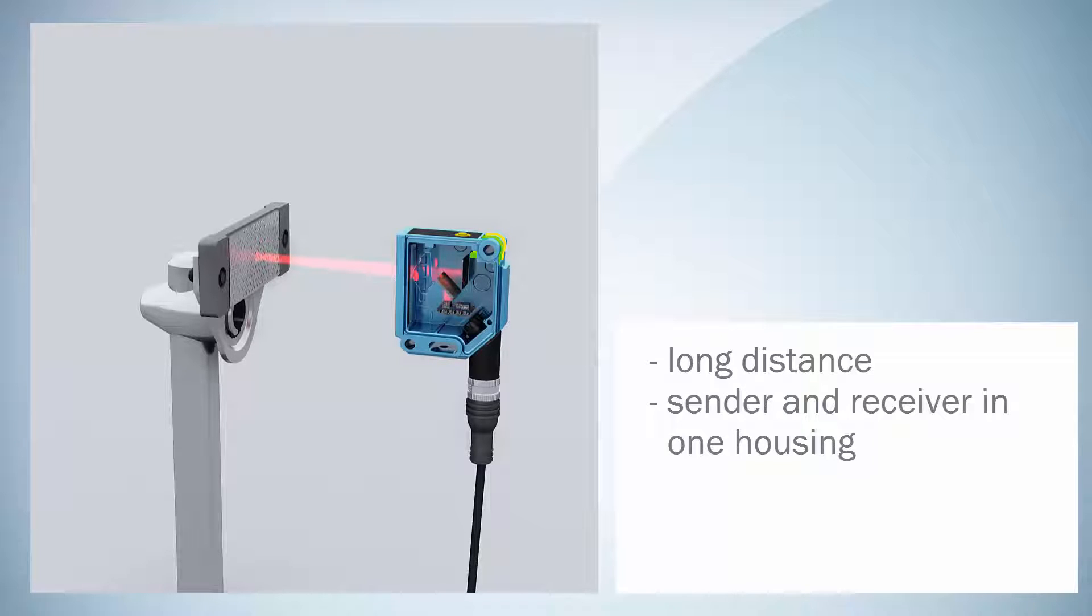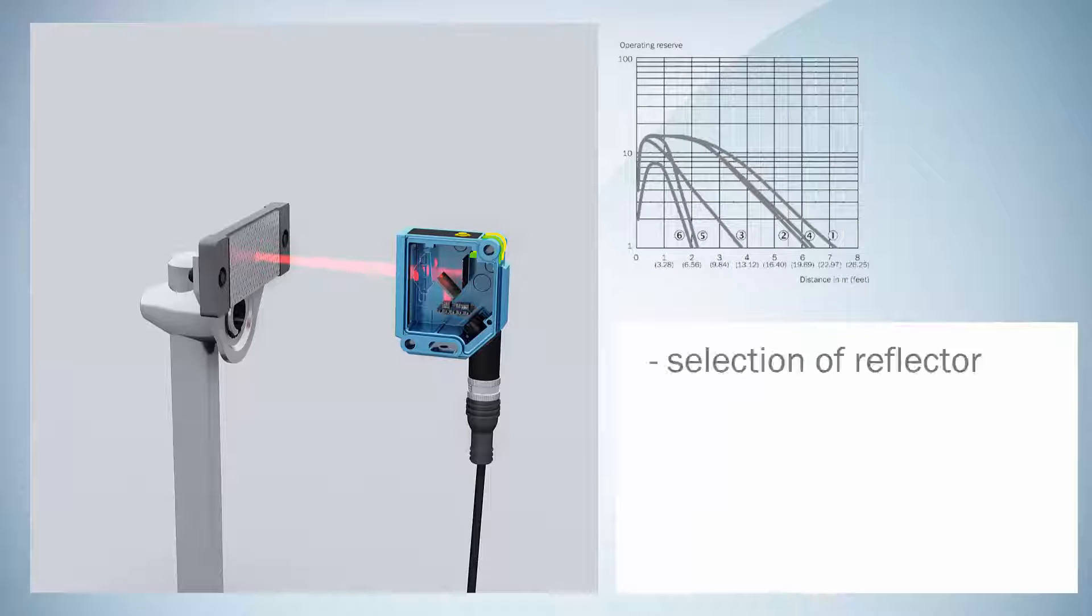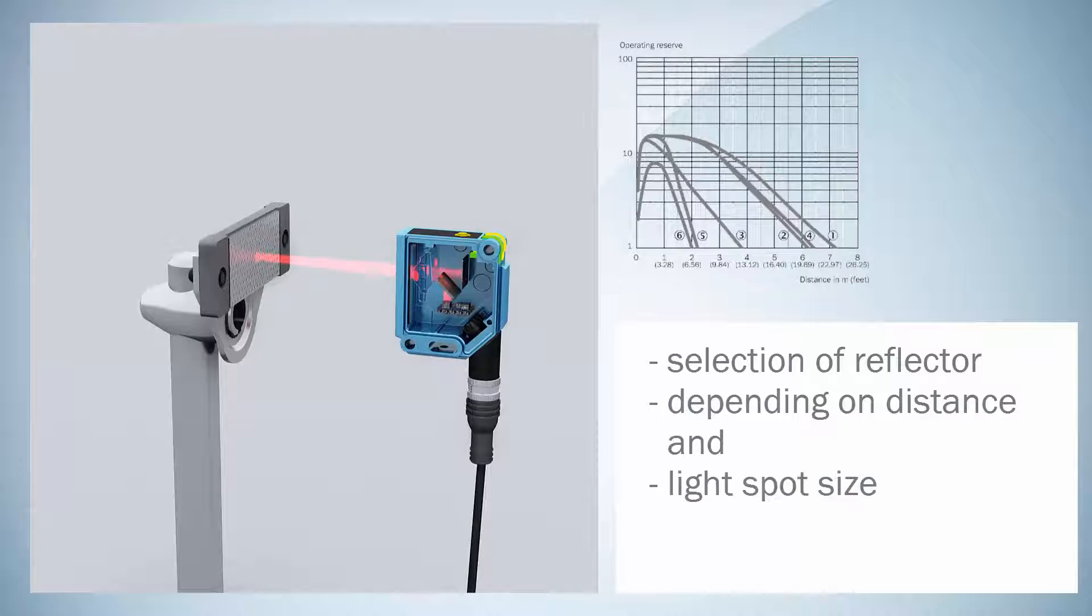The sensor combines sender and receiver in one housing and needs a reflector. A light barrier is built up between sensor and reflector. The first step is to select the right reflector size according to the sensing range required in the application and the light spot size of the sensor.